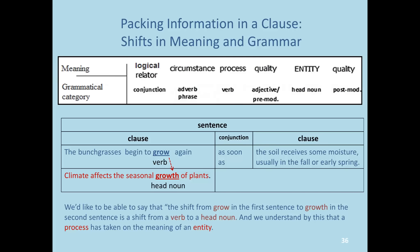In this slide we have the same figure, but with the meaning on top and the grammatical category on the bottom. When we talk about our choices, we'd like to be able to say that the shift from grow in the first sentence to growth in the second sentence is a shift from a verb to a head noun. By this, we understand that a process has taken the meaning of an entity — a verb, as a process, has taken on the meaning of a noun as an entity.